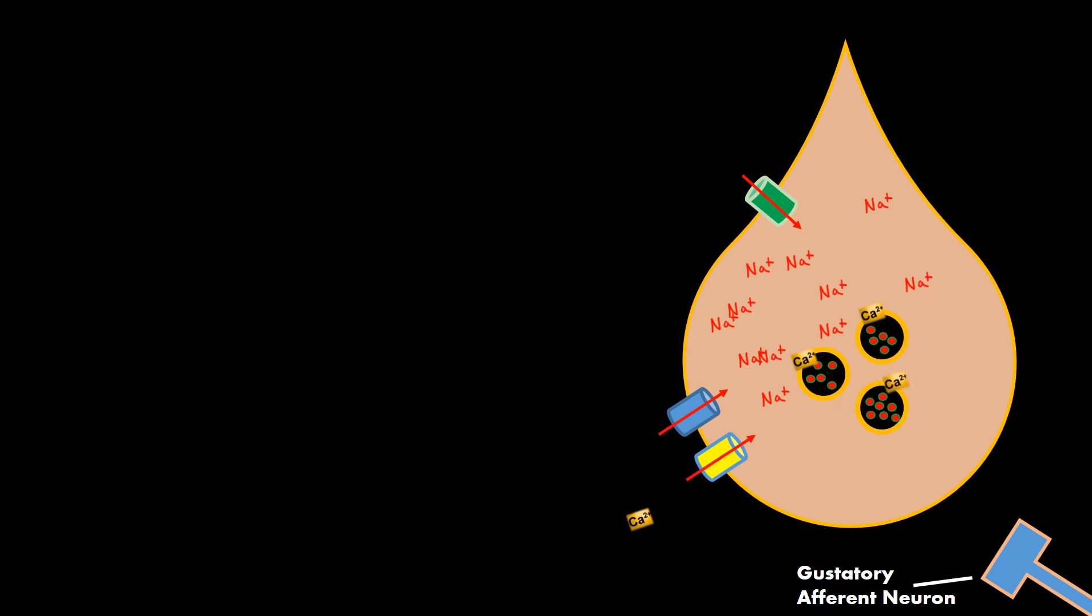So calcium is going to come in and it's going to bind to these vesicles here that are containing ATP and it'll cause their SNARE proteins to be active. And the calcium will also bind to SNARE proteins that are on the edge of the gustatory cell and activate those SNARE proteins.